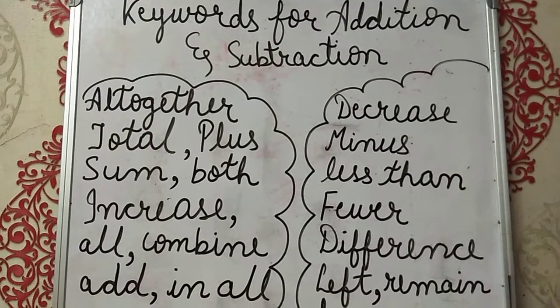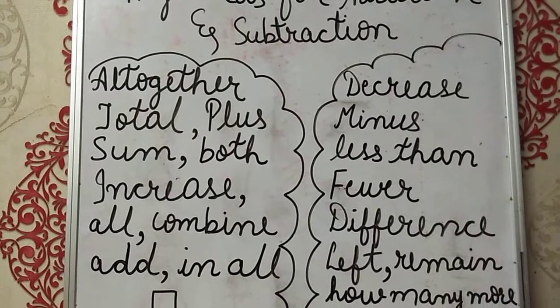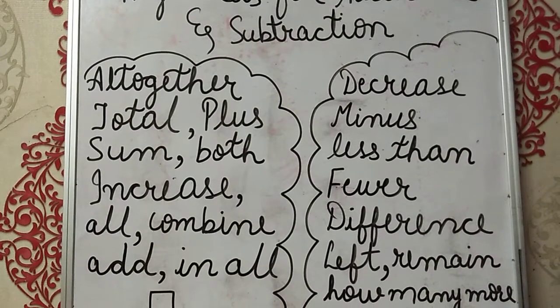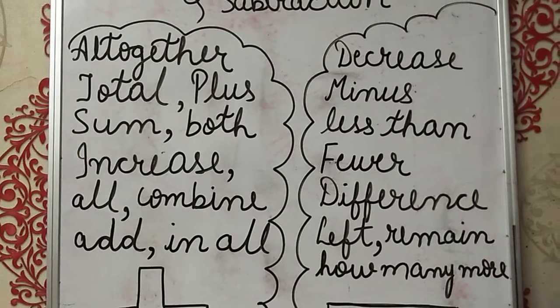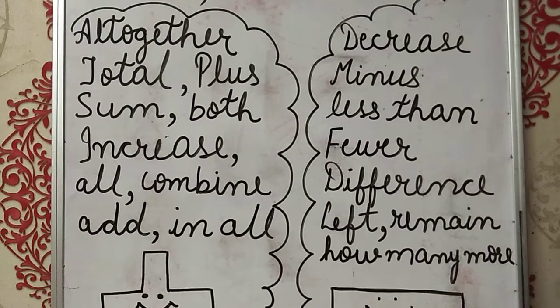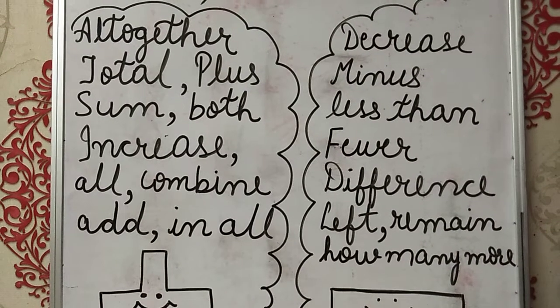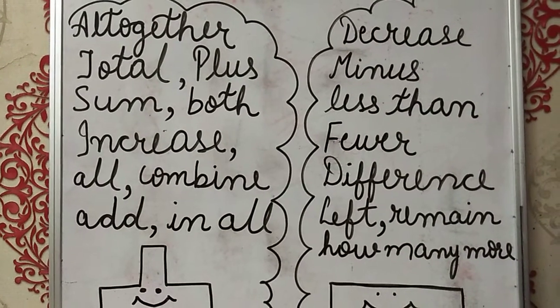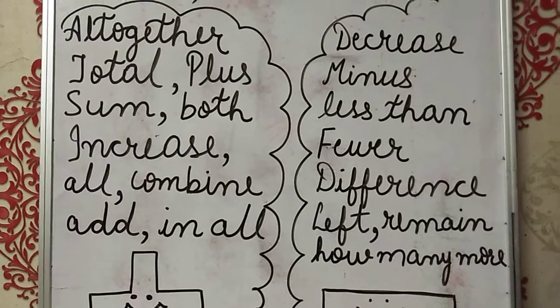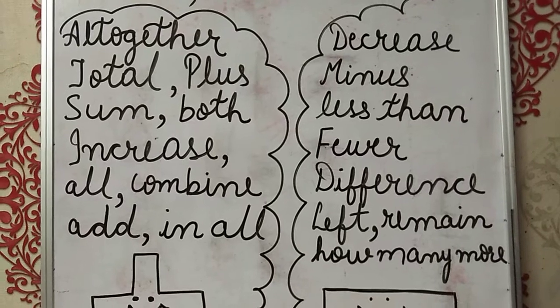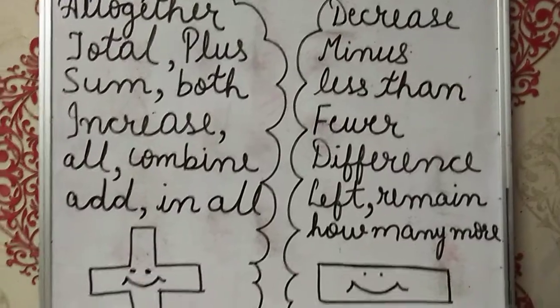So the keywords for addition are: all together, total, plus, sum, both, increase, all, combine, and in all. Whenever you will get through these words, these keywords in the word problem, you will easily get to know that these are the keywords for addition. So now we got the smiling addition sign.